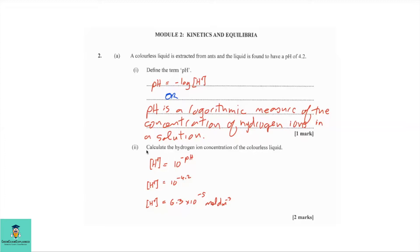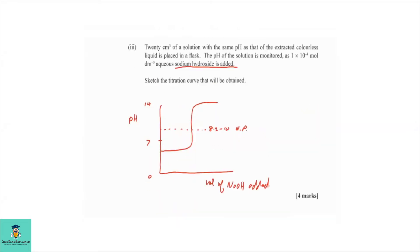Part two — calculate the hydrogen ion concentration of the colorless liquid. If we know the pH, we use the formula: H⁺ concentration equals 10 to the minus pH. We simply plug in the value, so that's 10 to the minus 4.2, giving H⁺ equal to 6.3 times 10 to the minus 5 moles per dm³.